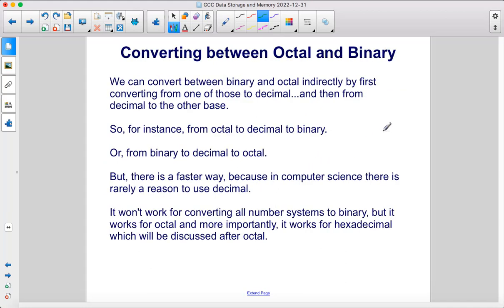We can convert between binary and octal indirectly by first converting from one of those to decimal, and then from decimal to the other base. So for instance, from octal to decimal to binary, or from binary to decimal to octal. But there's a faster way, because in computer science, there's rarely a reason to use decimal. It won't work for converting all number systems to binary, but it works for octal and more importantly, it works for hexadecimal, which will be discussed after octal.